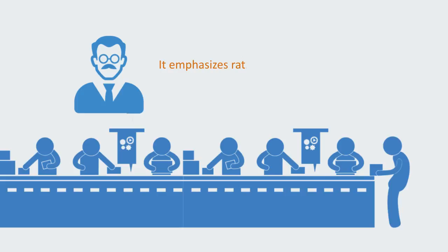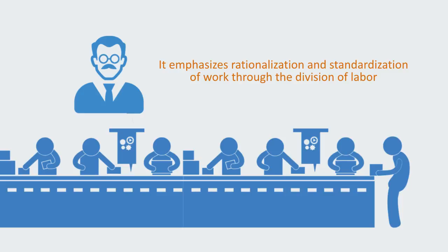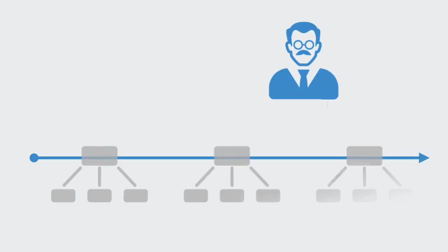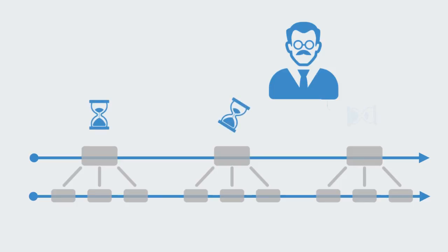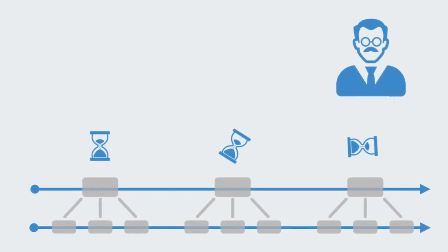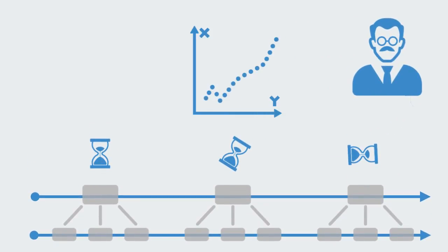Scientific management is based upon the work of Frederick Taylor, who laid down the fundamental principles of large-scale manufacturing through the assembly line. It emphasizes rationalization and standardization of work through the division of labor. Frederick Taylor looked at each step of production, breaking those steps down into sub-steps, and recording exactly how much time and how much motion was necessary to complete each task. By reducing the amount of motion, the worker could get more done, and productivity was increased — an idea that fitted perfectly with industrial age mechanization.